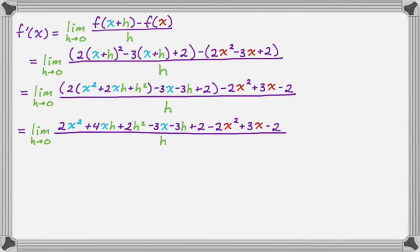Now I'm going to look through. At this stage, if anything in the numerator without an h doesn't cancel out, I've done something wrong. Let's see: 2x² and -2x² cancel. -3x and +3x cancel. +2 and -2 cancel. Everything else has an h, so I probably did this right.